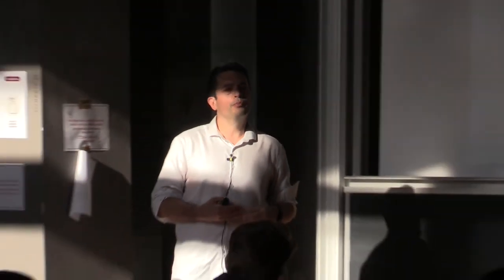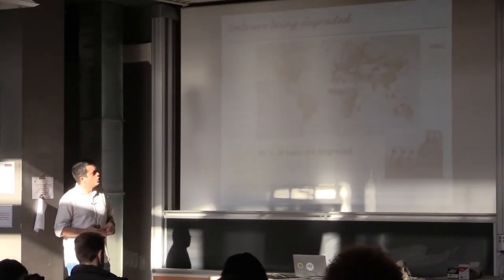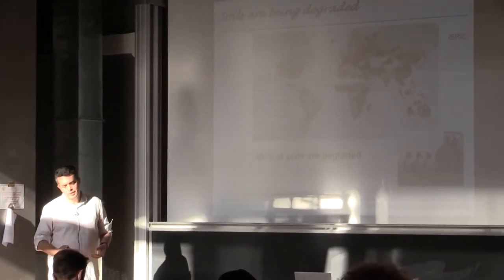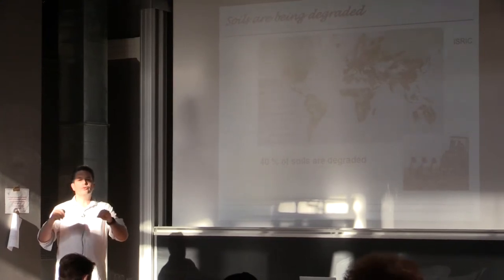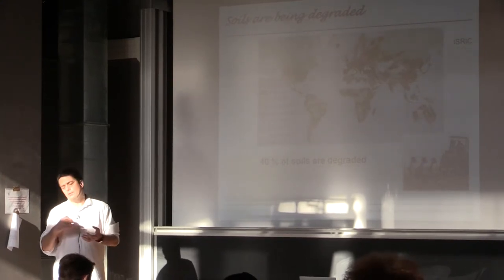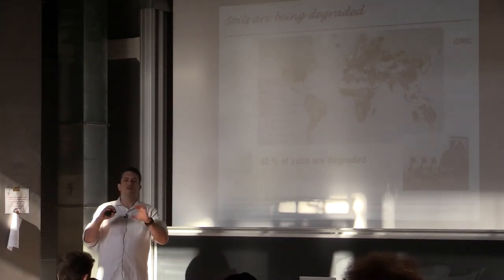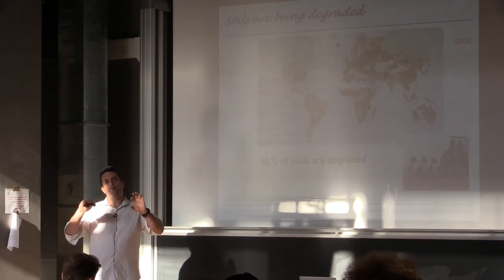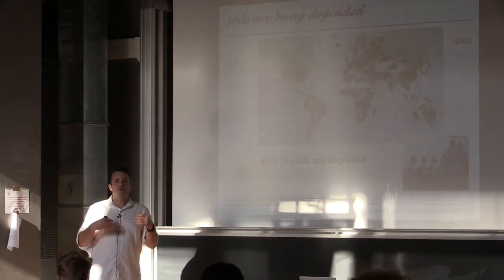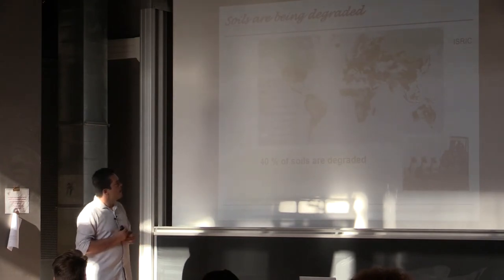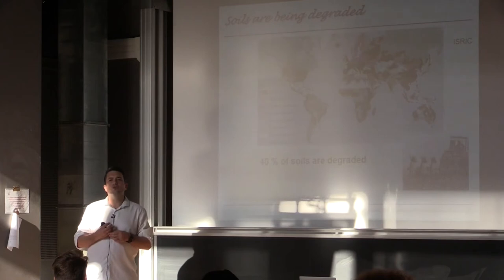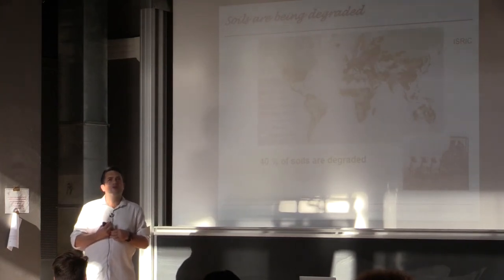Soils are also degraded by agriculture. Some assessments suggest about 40% of soils are degraded. There are many processes leading to this degradation. You have erosion — the removal of soil particles by wind and water — which is quite bad because it removes the top part of the soil, the part containing the most organic matter and nutrients. Many agricultural soils are also losing organic matter.